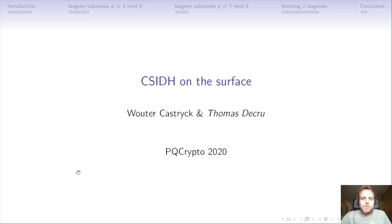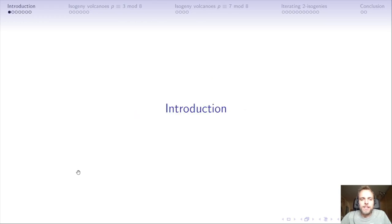Hello everyone and welcome to virtual PQCrypto 2020. My name is Thomas de Cru and I'll be presenting a paper called CSIDH on the Surface, which is joint work with Wouter Kastryk. I'll start with a brief introduction to sketch the background. Even though it's an isogeny-based cryptographic protocol, the underlying mathematics are not too hard, so it should be easy to follow. Over half my slides are images anyway.